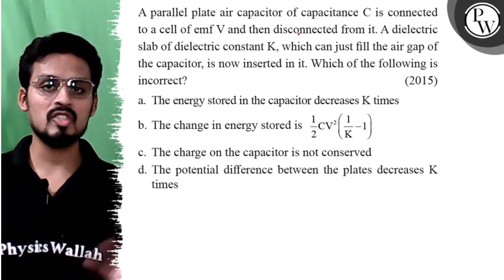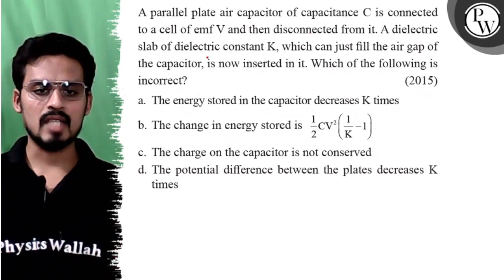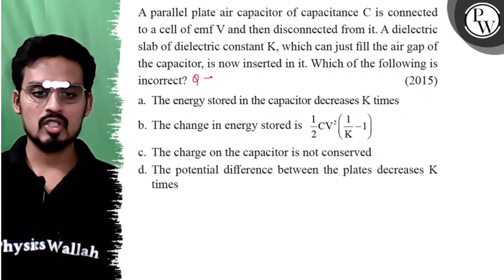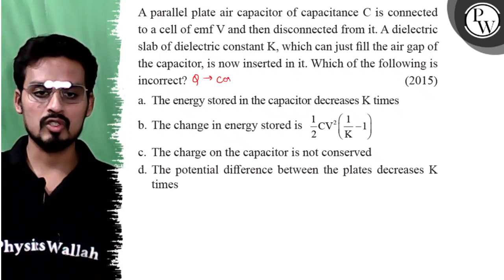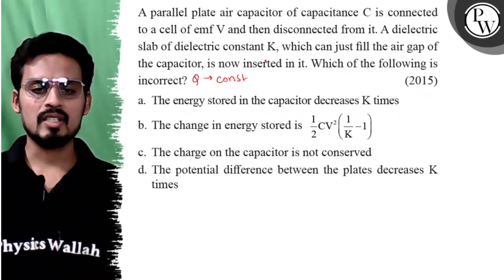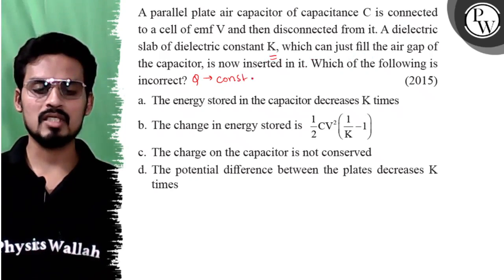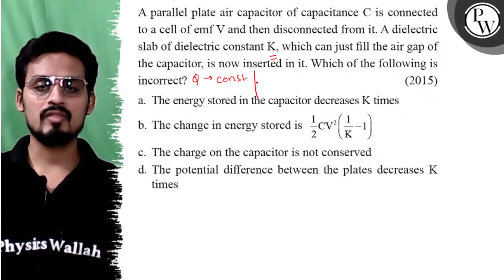It is disconnected, that means charge remains the same. A dielectric slab of dielectric constant K, which can just fill the air gap of the capacitor, is now inserted in it. Which of the following is incorrect?